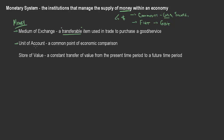The second thing we think about is the unit of account — money must be a common point of economic comparison. We could say a microwave is worth a certain number of cups, but we don't talk about things like that. We typically talk about prices, and in America we talk about prices in terms of dollars. That gives us a unit of account where we can compare things very easily. That common point of economic comparison is crucial when we think about money.